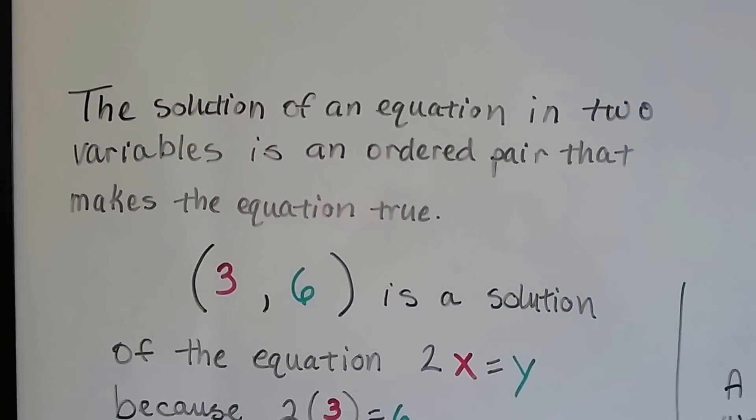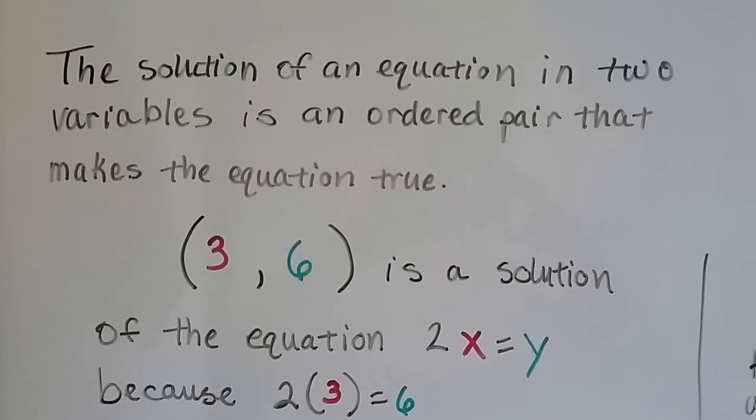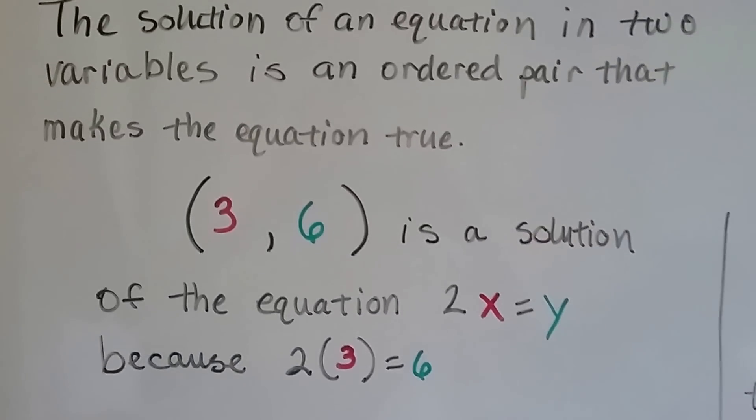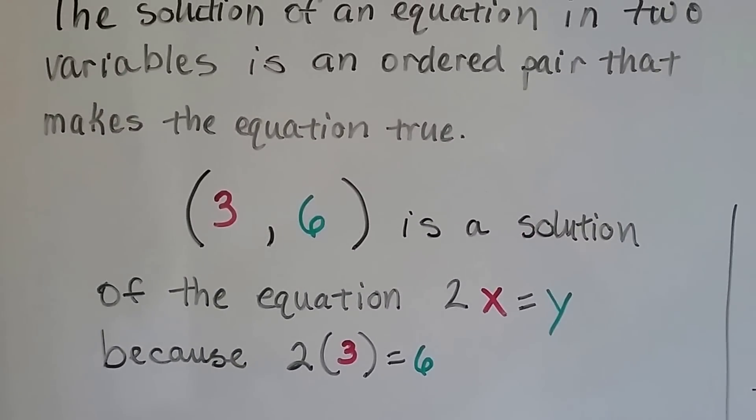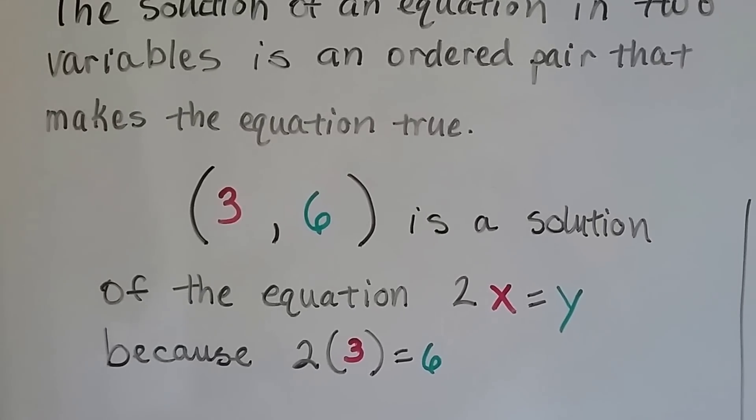The solution of an equation in two variables is an ordered pair that makes the equation true. 3 and 6 is a solution of the equation 2x=y because 2 times 3 equals 6. It fits. It makes it true.